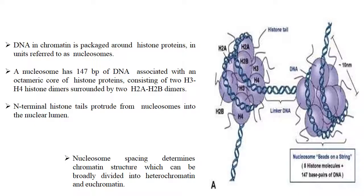DNA in chromatin is packaged around histone protein in units referred to as nucleosomes. It has 147 base pairs of DNA associated with an octameric core of histone proteins consisting of two H3 and H4 histone dimers surrounding two H2A and H2B dimers. There are four types: H1, H2A, H2B, H3, and H4. N-terminal histone tails protrude from the nucleosome into the nuclear lumen. Nucleosome spacing determines chromatin structure, broadly divided into heterochromatin and euchromatin. Euchromatin is the functionally active region, whereas heterochromatin is darkly staining and genetically less active.